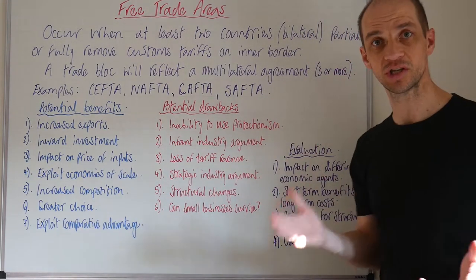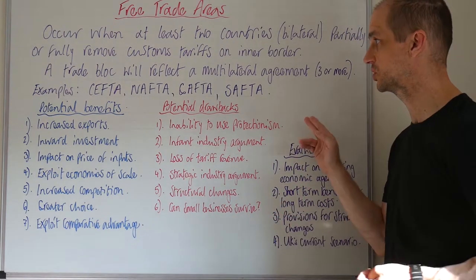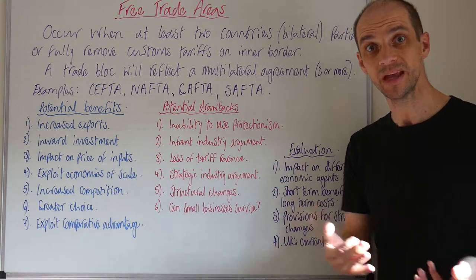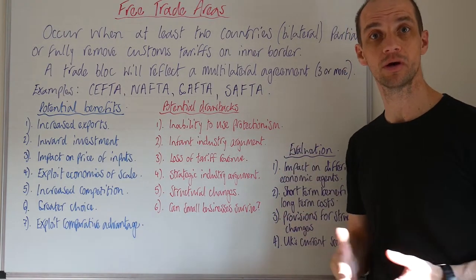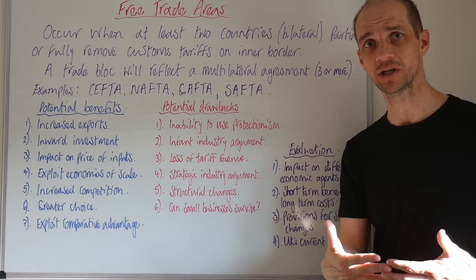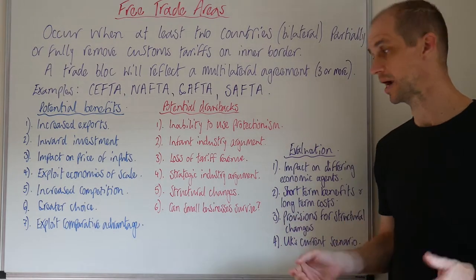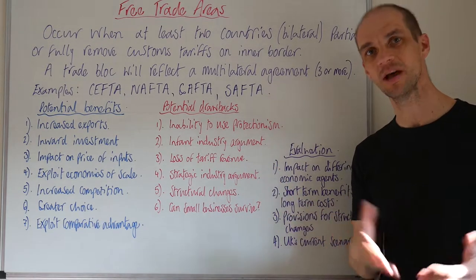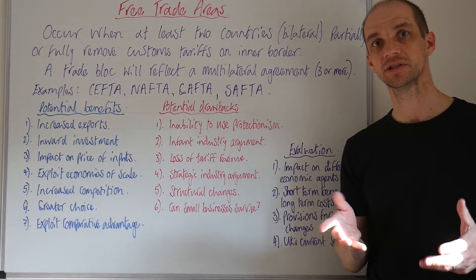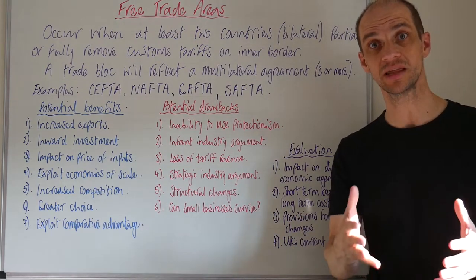Potential drawbacks — well, the inability to actually use protectionism. Some governments may see that as a real drawback; certainly Donald Trump has cited that in relation to NAFTA. There's also the infant industry argument — you may want to protect some of your infant industries from foreign competition, and now you won't be able to do that. There could also be the loss of tariff revenue if you've had to remove your tariffs, which may pose problems for the government. Then what about strategic industries — are you going to protect those and negotiate that within your free trade agreement in advance?